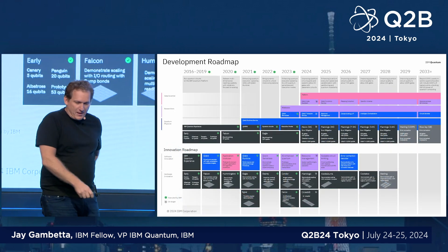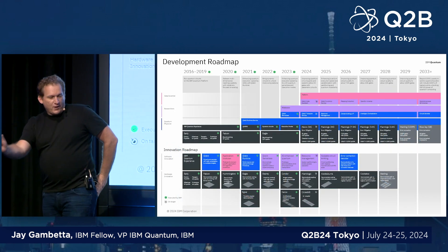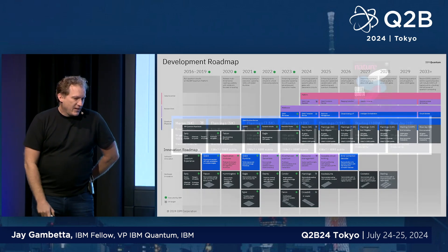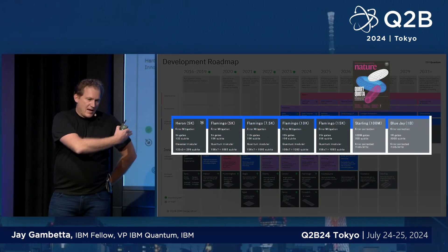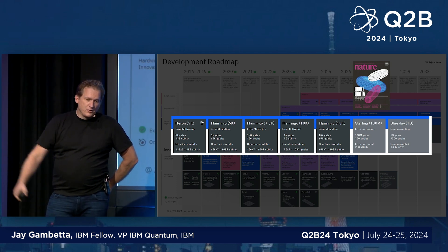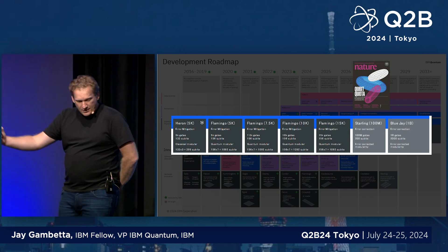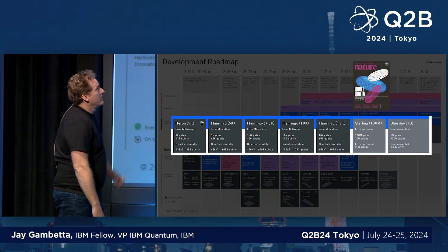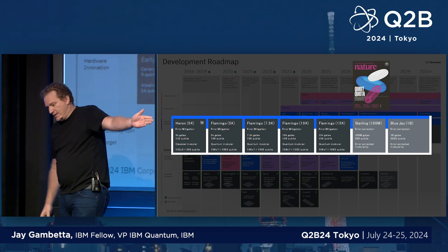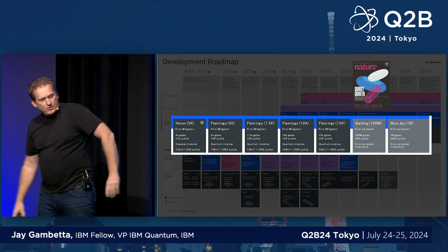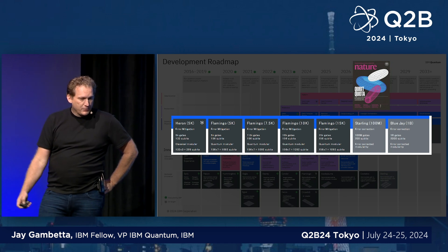IBM has a roadmap — I'm not going to go through it in detail, you can find it online. I would just like to say that we are pretty confident in the hardware going from our systems today to our future fault-tolerant machines. Our goal and our timeline is to achieve this in 2029: demonstrations of machines that are using fault tolerance.